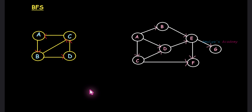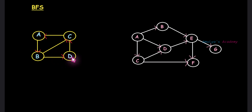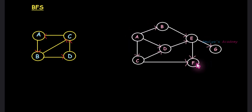Here we have an example — this is a strongly connected graph. You can reach any node from any node of this graph. For example, if I want to reach D from A, there is a path. But this is a weakly connected graph because you can't reach A from D. This is a weakly connected graph. Today we want to write a Python program to check whether a given directed graph is strongly connected or weakly connected.